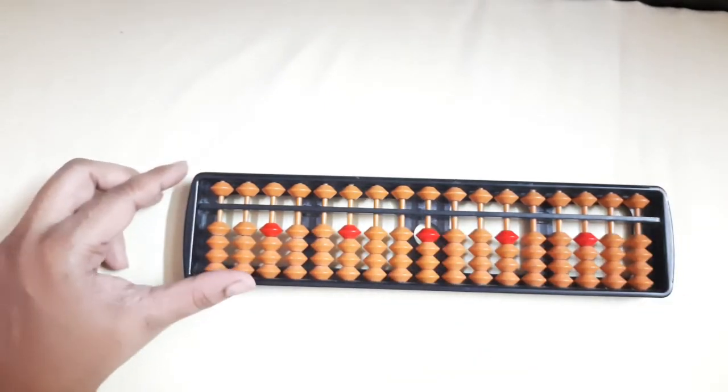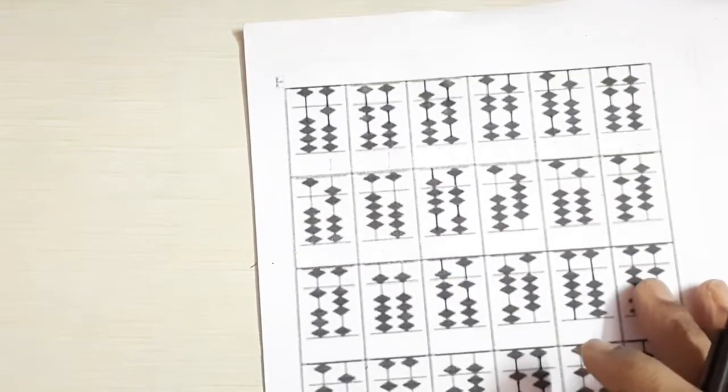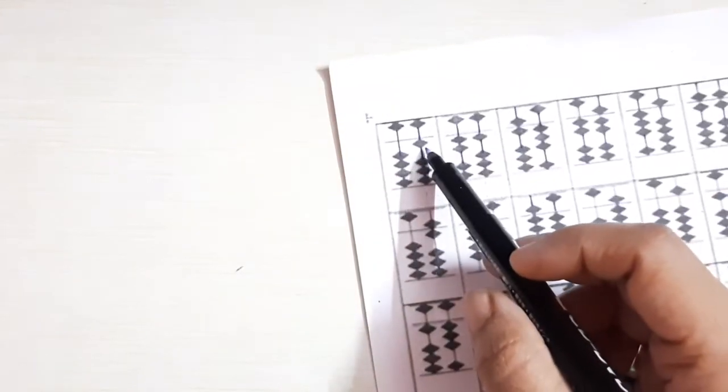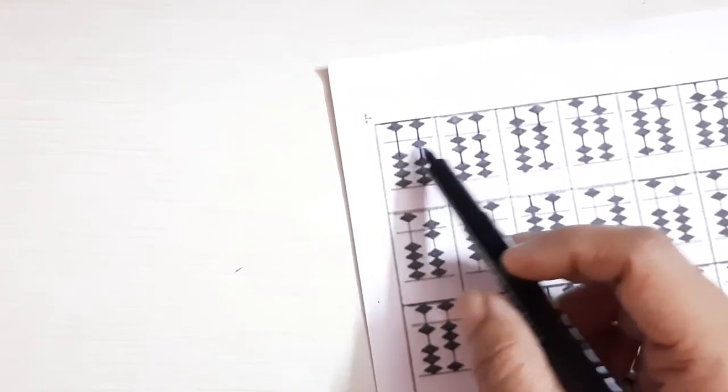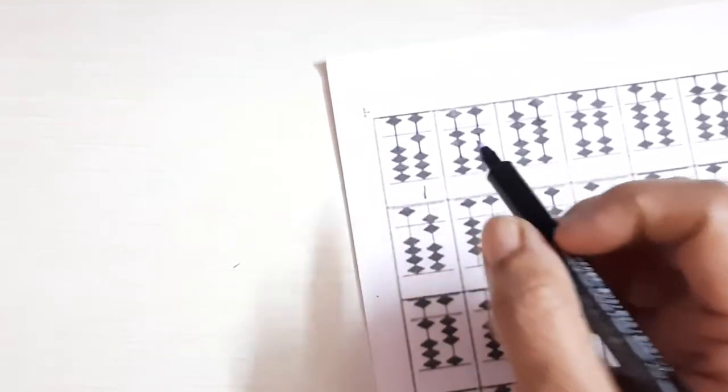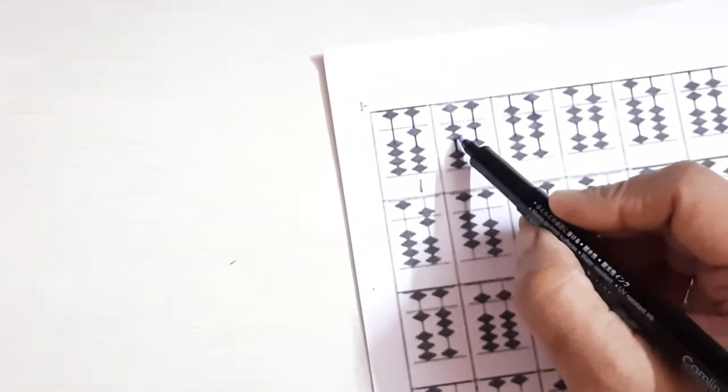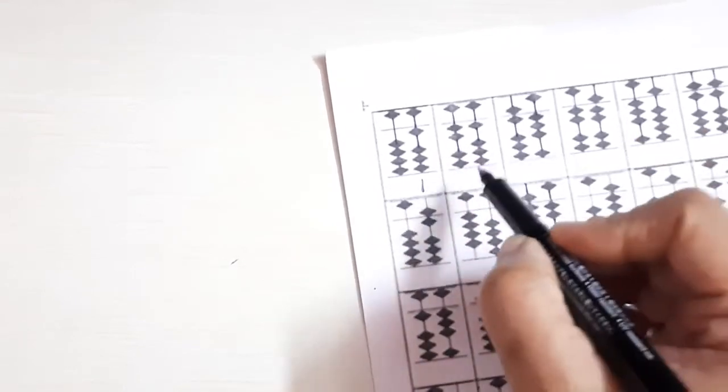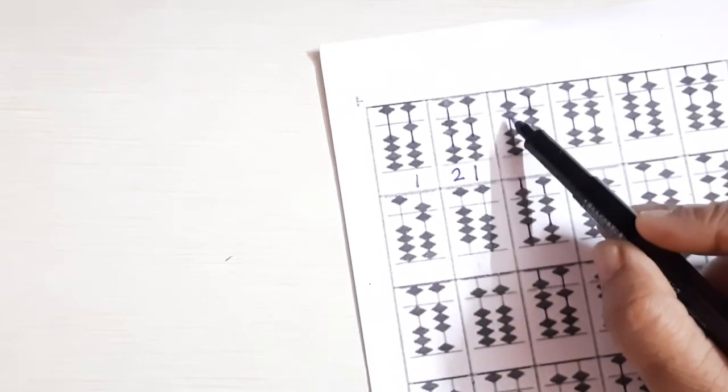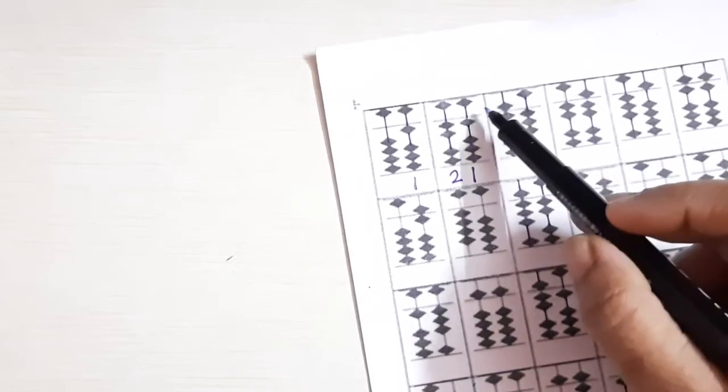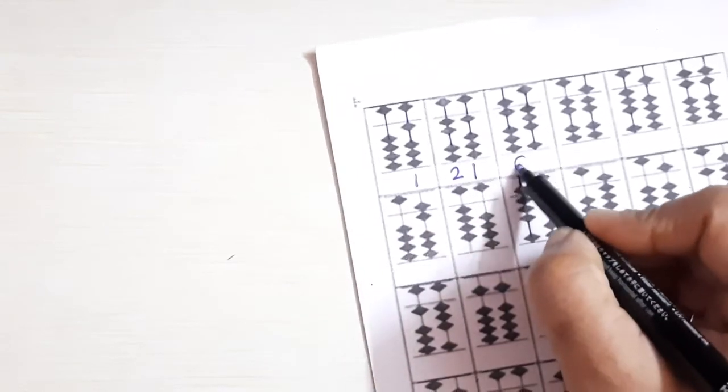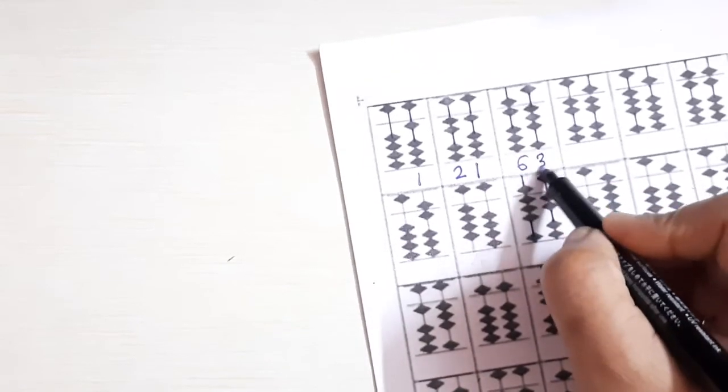Now we will see some more examples here. Now we can see here some examples. Now see, in the first one, 1 bead is touching the bar. So your value of the abacus will be 1. Here none of the beads, so 0. Now here 2, 2 beads are touching the bar, and your 1. So it will be your 21. Here 5, 1, 6. Because upper bead's value is 5, and down 1 is 1. So 5 and 1 makes a 6, and your 3, 63.